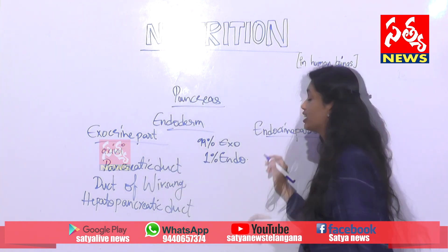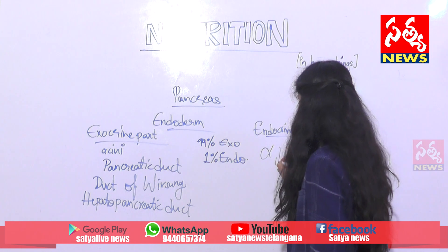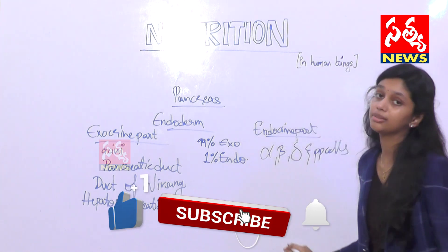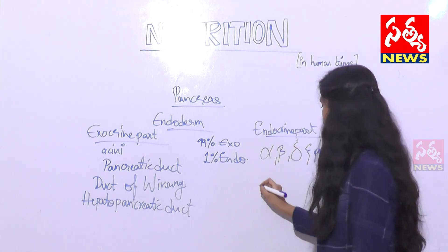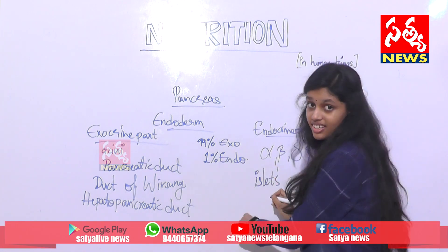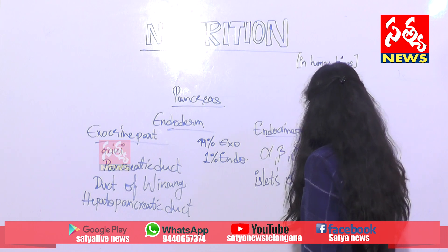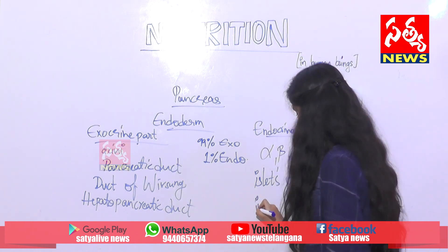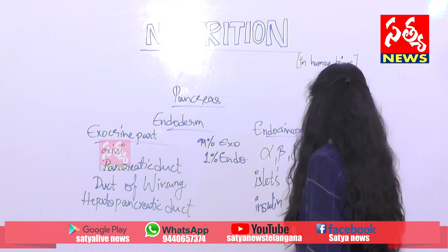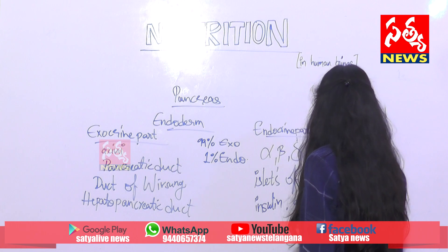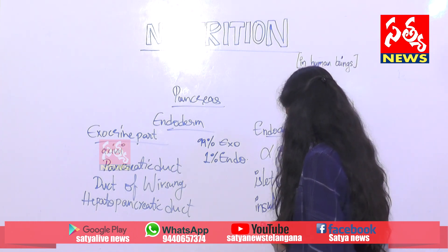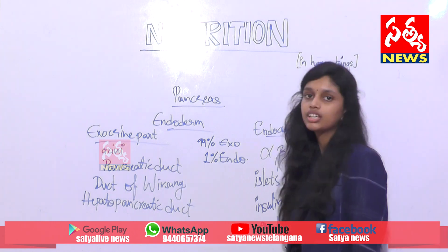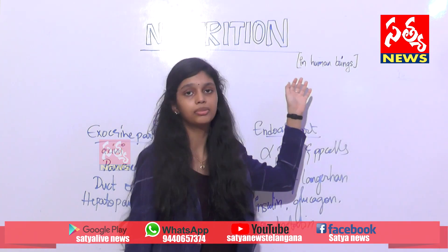The endocrine part of the pancreas contains cells like alpha cells, beta cells, gamma cells, and PP cells. These cells are present in between the groups of acini and are called the islets of Langerhans. These cells secrete insulin, glucagon, somatostatin, and pancreatic polypeptide hormone.